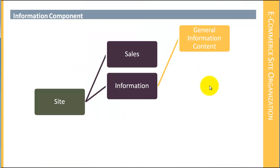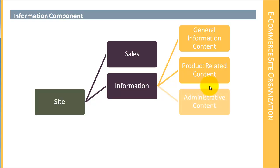The second information section is the product related content, and I think we've probably discussed that at length already, but it is an important part of this information system. The third part is the administrative content, and again that involves all of the policies, facts, and support information. And then finally we have the SEO component.